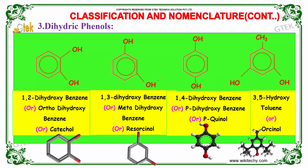Now we will discuss about Dihydroxybenzene. The first diagram here is 1,2-Dihydroxybenzene, also known as Catechol. The second one is 1,3-Dihydroxybenzene, also known as Resorcinol. The OH group exactly opposite to the other OH group is known as 1,4-Dihydroxybenzene, also known as Paraquinol. If we have two OH groups at the Meta positions, it would be known as 3,5-Hydroxytoluene or Orsinol.